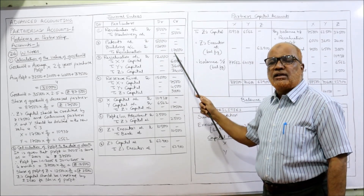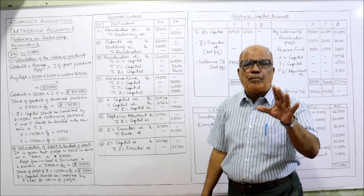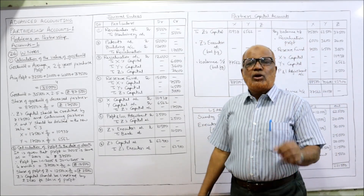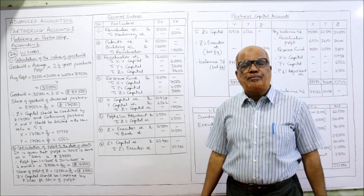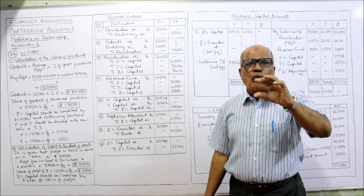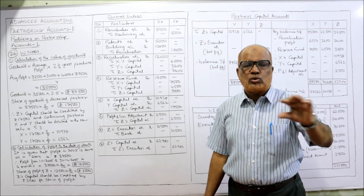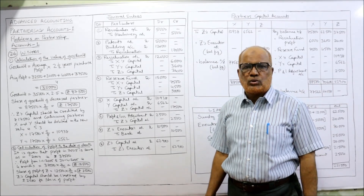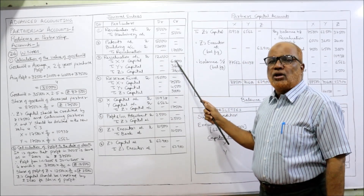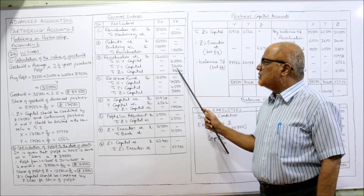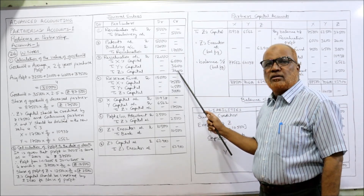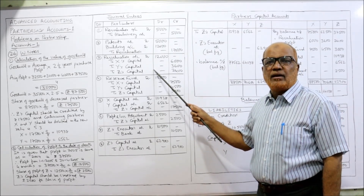Profit or loss on revaluation: Revaluation Account is credited by 17,000 and debited by 5,000, so credit side is more — profit on revaluation is 12,000. Entry: Revaluation Account Dr. 12,000 to X Capital 6,000, Y Capital 3,600, Z Capital 2,400, in the ratio of 5:3:2. Being the profit on revaluation shared by all partners.